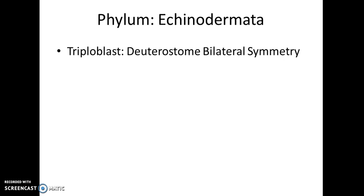And echinoderms. Echinoderms are triploblasts. They are deuterostomes — this is big, because they are the only deuterostomes, and they are the most advanced of all the invertebrates because of this. Deuterostomes are more advanced than protostomes — we are deuterostomes. They have bilateral symmetry. You might think they look like a circle or a star, but they are still bilaterally symmetrical, and their larvae are also bilaterally symmetrical. Don't let anyone tell you any different. You'll get the rest of the information in class or on your own.